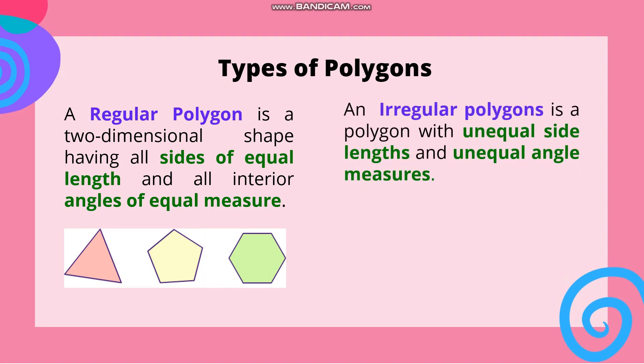An irregular polygon is a polygon with unequal side lengths and unequal angle measures. Based sa mga given examples ng irregular polygons, hindi equal ang length ng bawat side at hindi rin equal ang measure ng bawat angle.